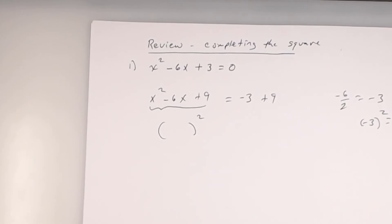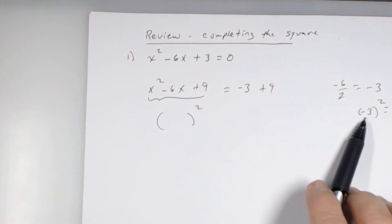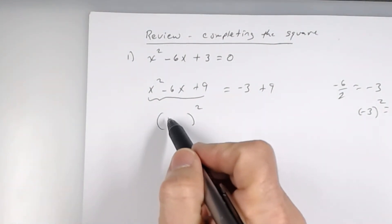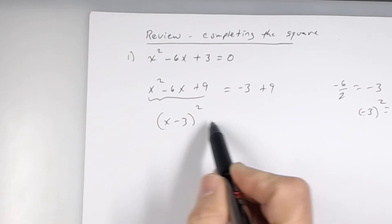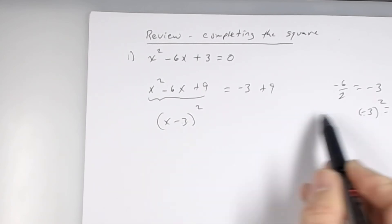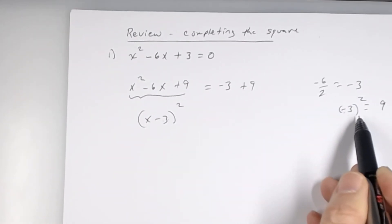X squared minus 6X plus 3 is what binomial times itself? X minus 3. X minus 3. Remember, we said this. Just make sure that when you get to this point right here, that whatever's in here, see that number should match up. If you're doing this correct right here, that number right here should match up with this.